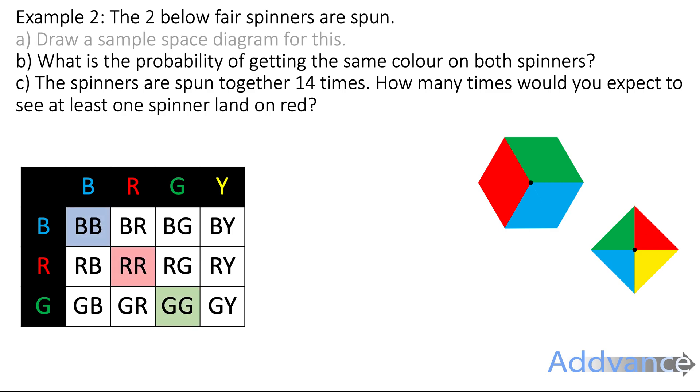Now, what is the probability of getting the same colour on both spinners? So, it's blue blue, red and red, and green and green. Well, there's 3 options out of 12 possible combinations. So, 3 out of 12 is the same as 1 out of 4.